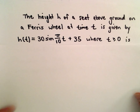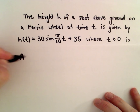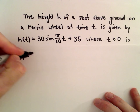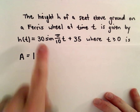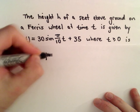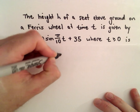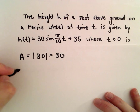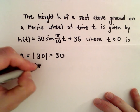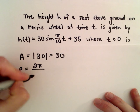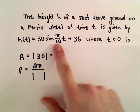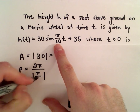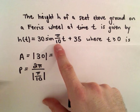A couple things to think about to get started: the amplitude will be the absolute value of 30, which is just 30. The period will be 2π divided by the absolute value of b, and π/10 will be the value for b.